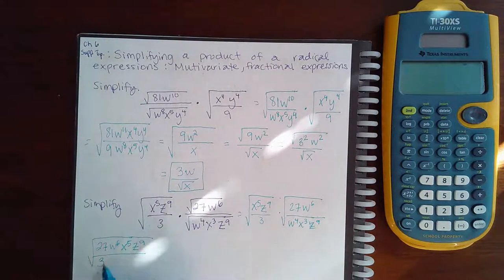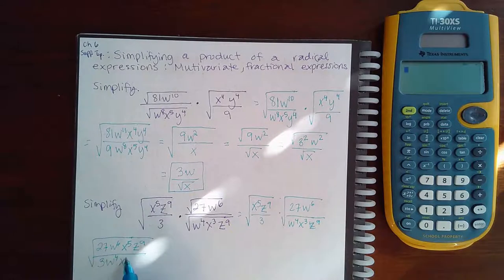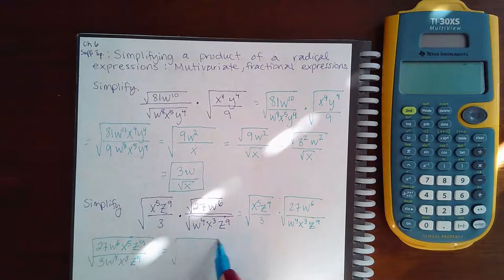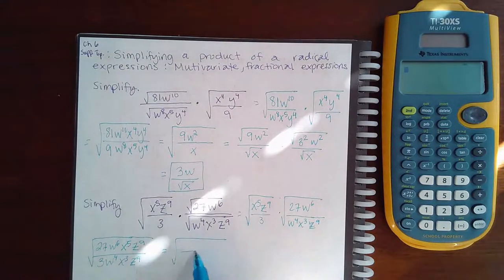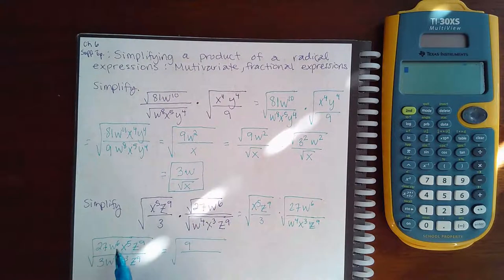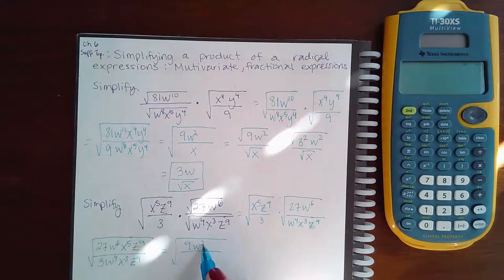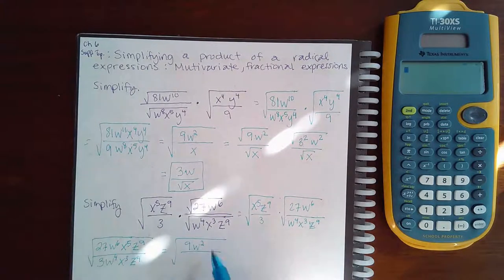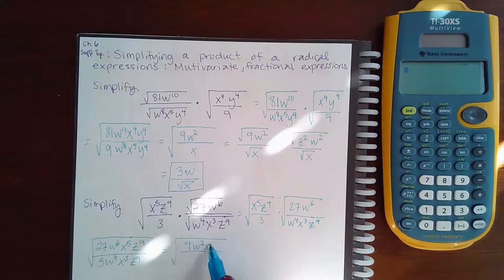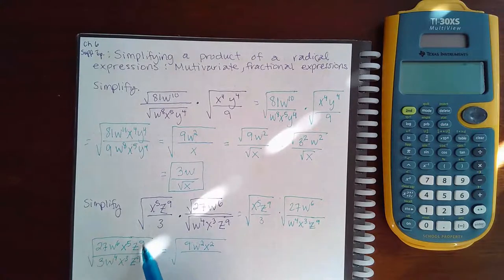If we simplify this, 27 divided by 3 is 9, w to the 6 divided by w to the 4 is w squared, x to the 5 divided by x cubed is going to be x squared, and z to the 9 divided by z to the 9 cancel each other out. So I'm just left with this.